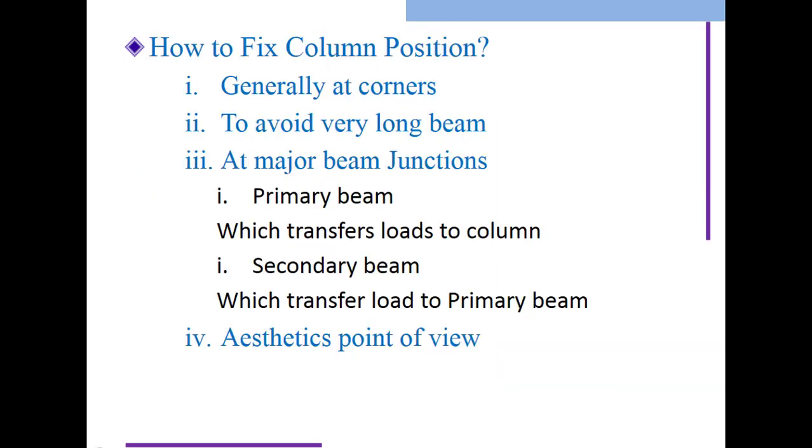In the last lecture I discussed how to fix column position. Generally, columns are placed at corners. At corners, we create different orientations and column sizes because the load acting on that column is very big - it may be wind load or dead load. The column at a corner is two-sided open and two-sided locked, creating different load conditions.